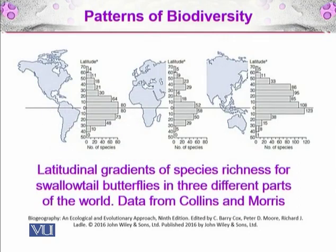Here you can see the latitudinal gradients of species richness for swallowtail butterflies in three different parts of the world, using data from Collins and Morris. On the left you can see the Americas — North and South — where North America is at much higher latitude and South America has much more butterfly diversity. A similar pattern is seen in Africa, with greater diversity in the Niger Delta.